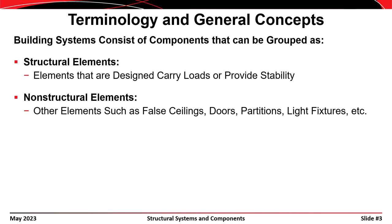For example, a beam or a column would be a structural element. A brace or a strut would be a structural element, even though it might not carry load. But a stairwell or a railing or something like that would be considered a non-structural element.